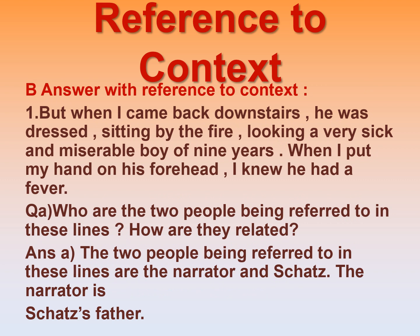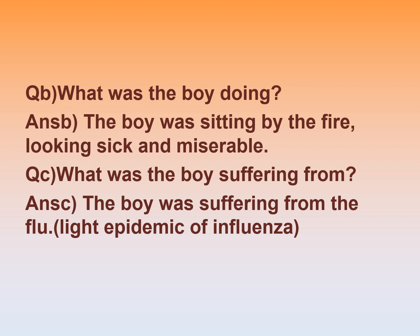Let us see the questions based on reference to context. The first extract is: 'But when I came back downstairs, he was dressed, sitting by the fire, looking a very sick and miserable boy of 9 years. When I put my hand on his forehead, I knew he had fever.' (a) The two people being referred to in these lines are the narrator and Skatz; the narrator is Skatz's father. (b) The boy was sitting by the fire, looking sick and miserable. (c) The boy was suffering from flu, that is a light epidemic of influenza.